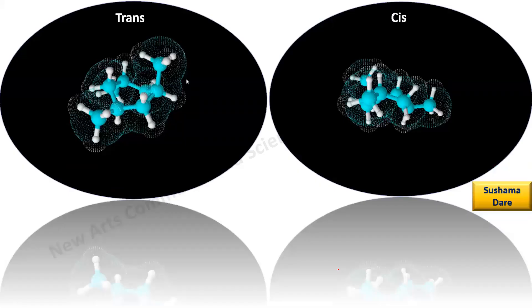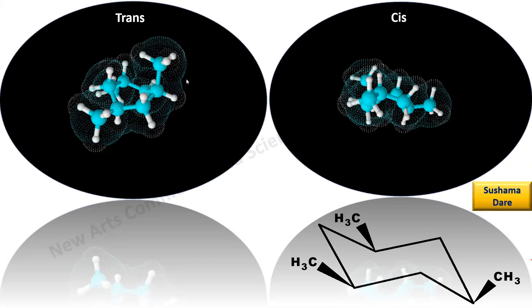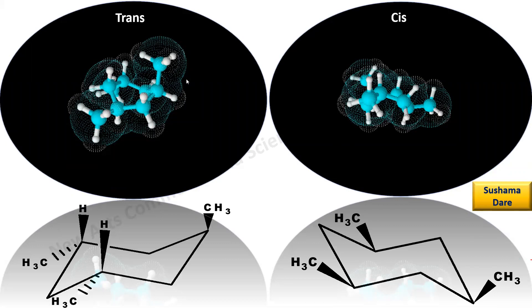You can now see the three-dimensional rotation of both cis and trans molecules to get a clear idea of how these molecules look in a three-dimensional view.